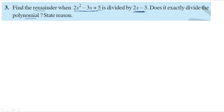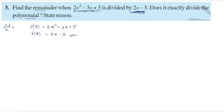Does 2x minus 3 exactly divide the polynomial or not? We need to give a reason. First let us find the remainder. Let p of x equals 2x squared minus 3x plus 5 — this is the dividend. The divisor is f of x equals 2x minus 3. First we find the zero of this divisor.